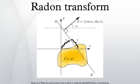In mathematics, the Radon transform in two dimensions, named after the Austrian mathematician Johann Radon, is the integral transform consisting of the integral of a function over straight lines.